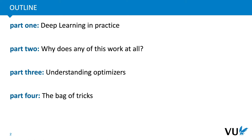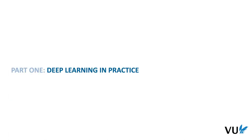First, we'll look at the broader outline of what deep learning looks like in practice — what kind of steps do we go through in a basic deep learning project. Then we'll dig a little deeper into why any of these methods work at all. And then in parts three and four, we'll delve deeper into the technology and tricks we need to add to our toolkit in order to effectively build deep neural networks.